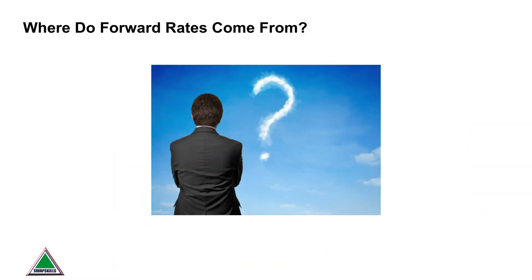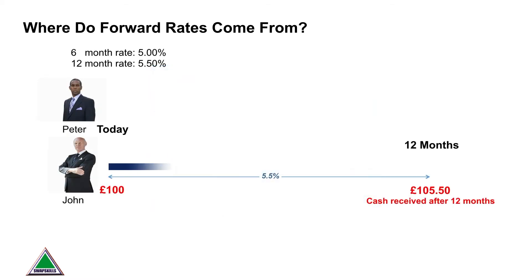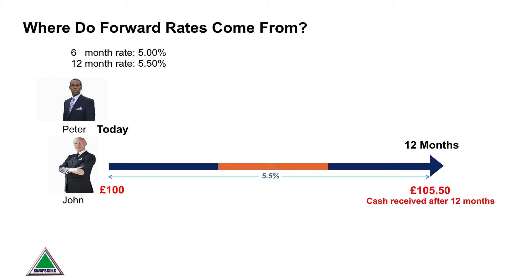So where do these numbers actually come from? Are you just guessing them and making them up or asking around? They're actually specifically calculated numbers — purely a mathematical derivation. Here's a simplistic way to look at it. Imagine you've got Peter and John, and they've both been given £100 to invest. I've got a six-month rate of 5% and a 12-month rate of 5.5%. John decides to invest his £100 in the market for 12 months at 5.5%, and that's going to give him principal and interest at the end of the year of £105.50.